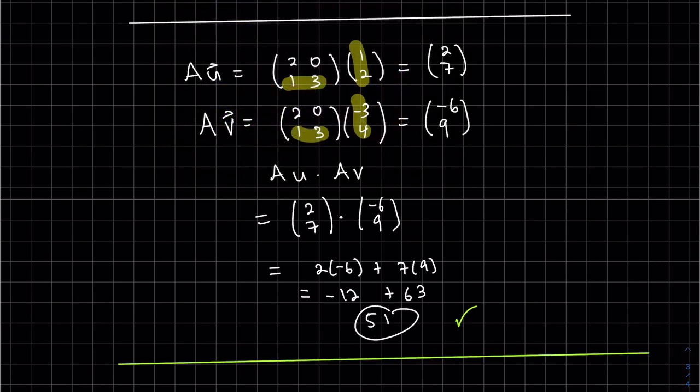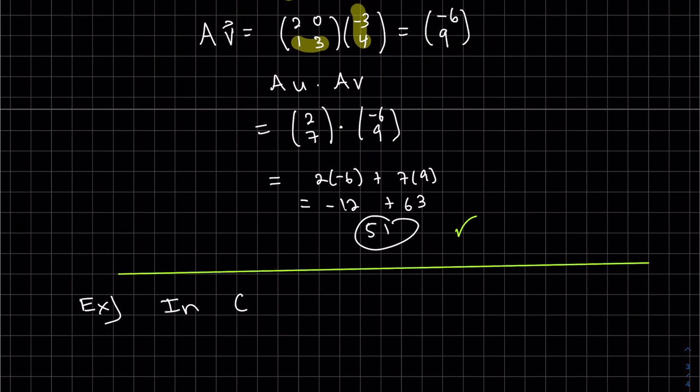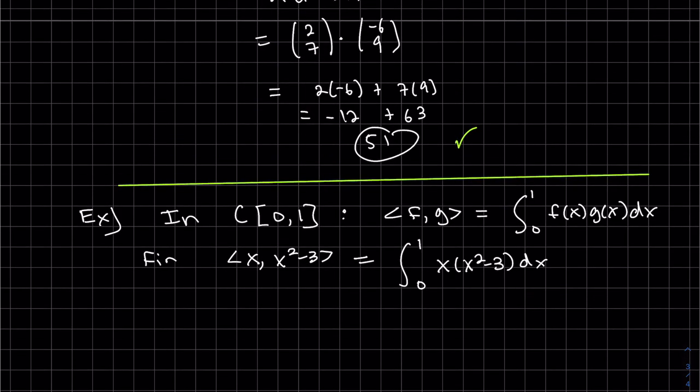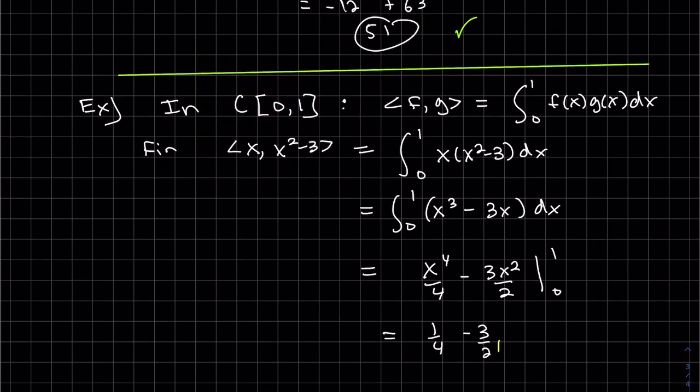Let's look at a different example. So the inner product on the set of continuous functions from 0 to 1 is the definite integral of the product of f and g from 0 to 1. And that's definitely a scalar. They all have to be scalars. Let's look at an example. So we just multiply these two and integrate it from 0 to 1. And the answer is minus 5 fourths.